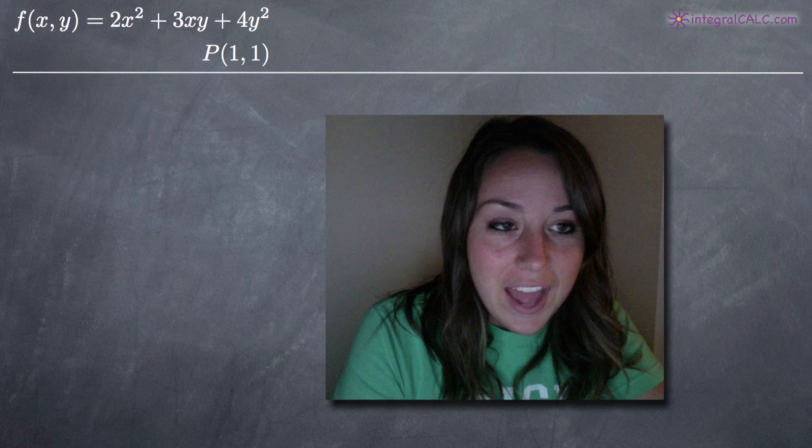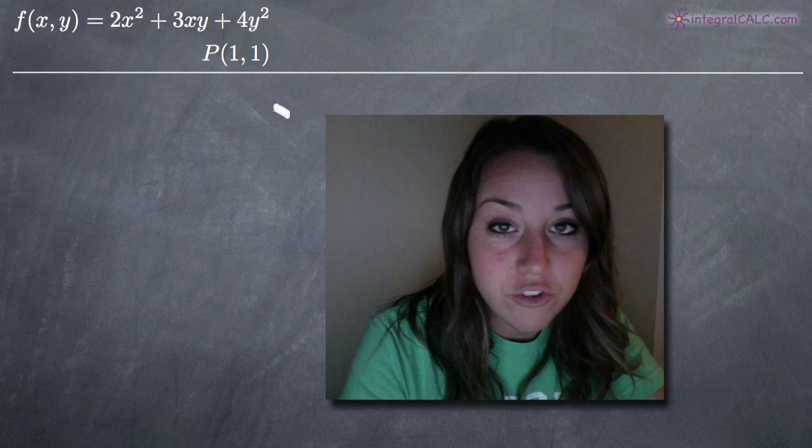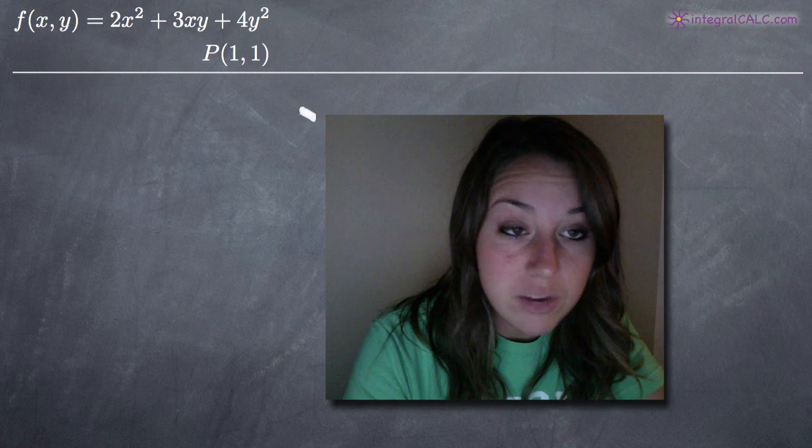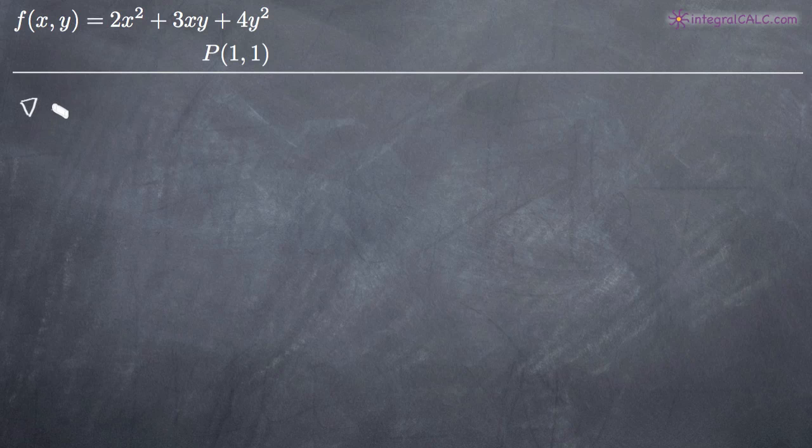Today we're going to be talking about the gradient vector. In this problem, we've been asked to find the maximum directional derivative, which is also called the gradient vector, and the direction in which it occurs. To find the direction, we need to find the gradient vector at the point p by taking the partial derivatives of f with respect to x and y and then plugging in the point p. The gradient vector is denoted by the upside-down triangle, ∇f(x, y), consisting of the partial derivatives with respect to x and y.